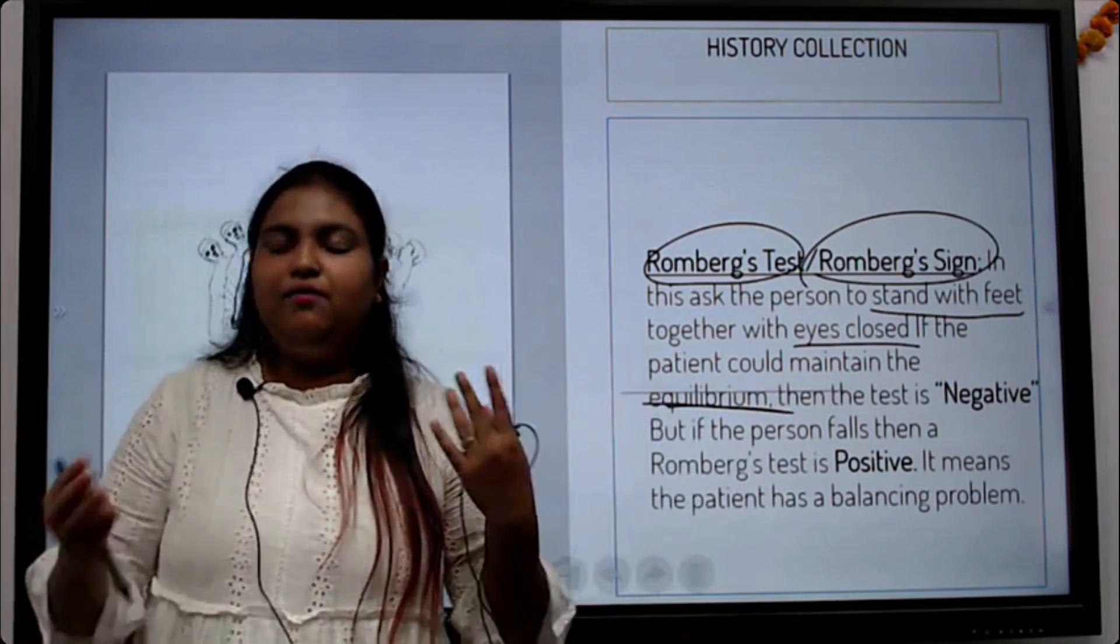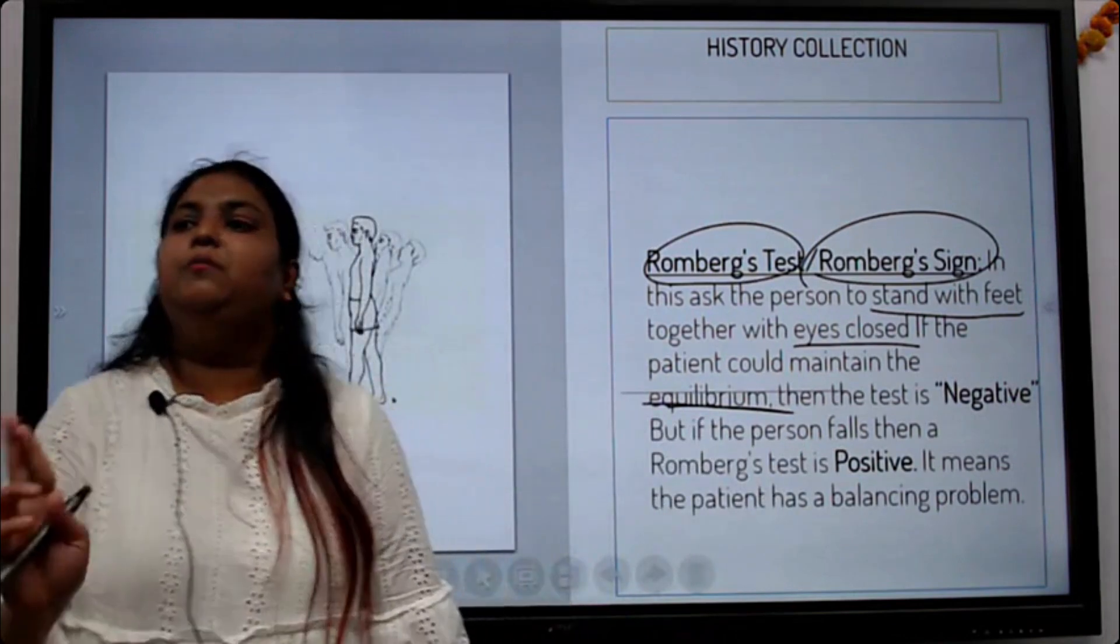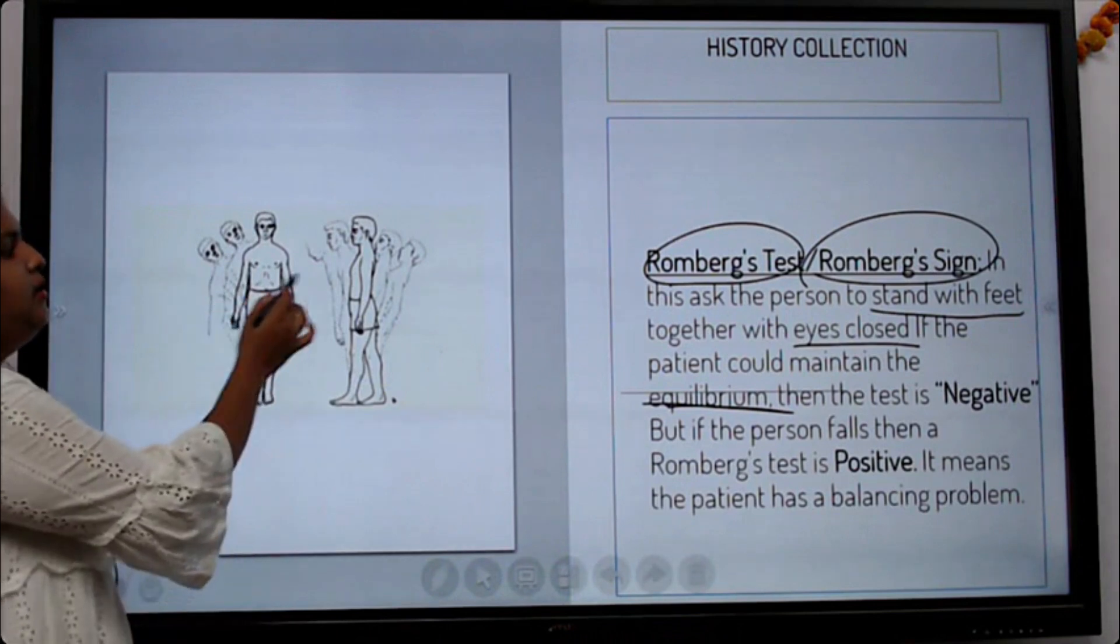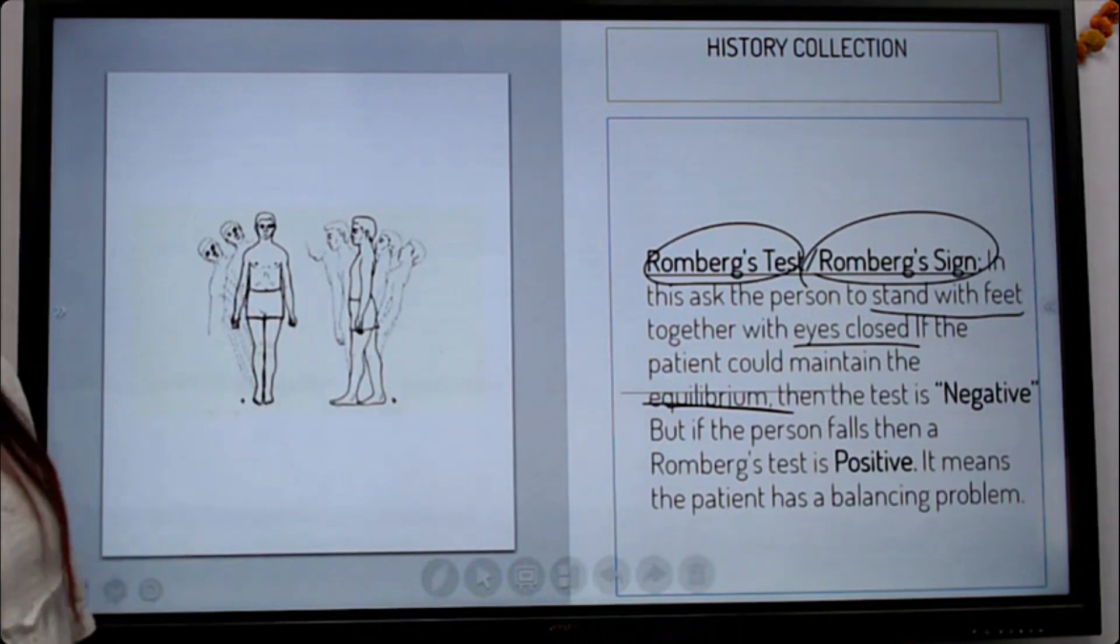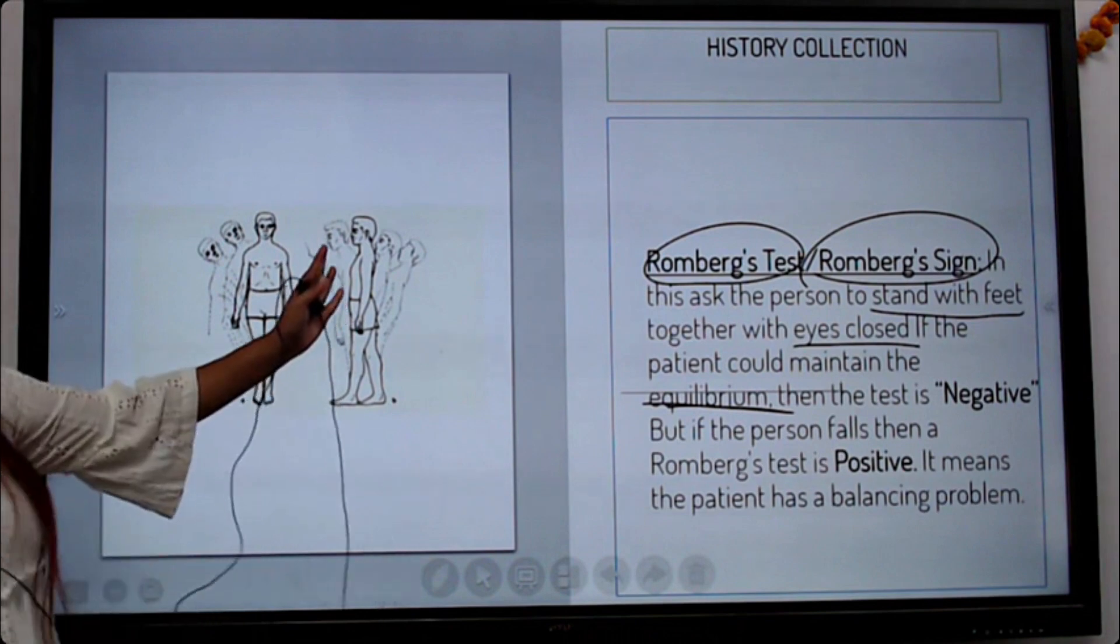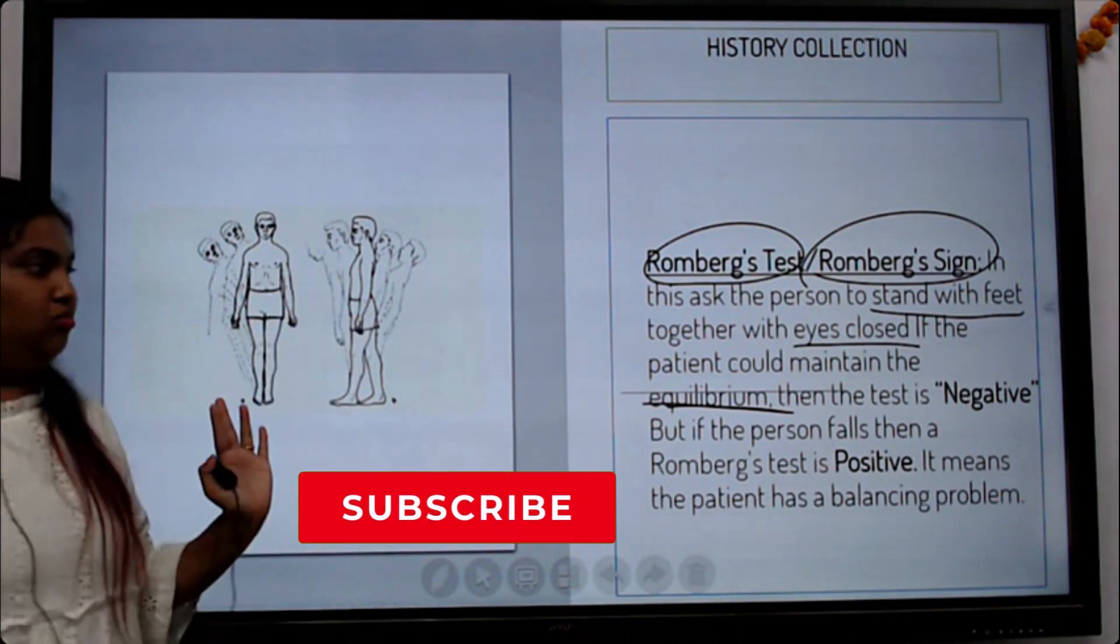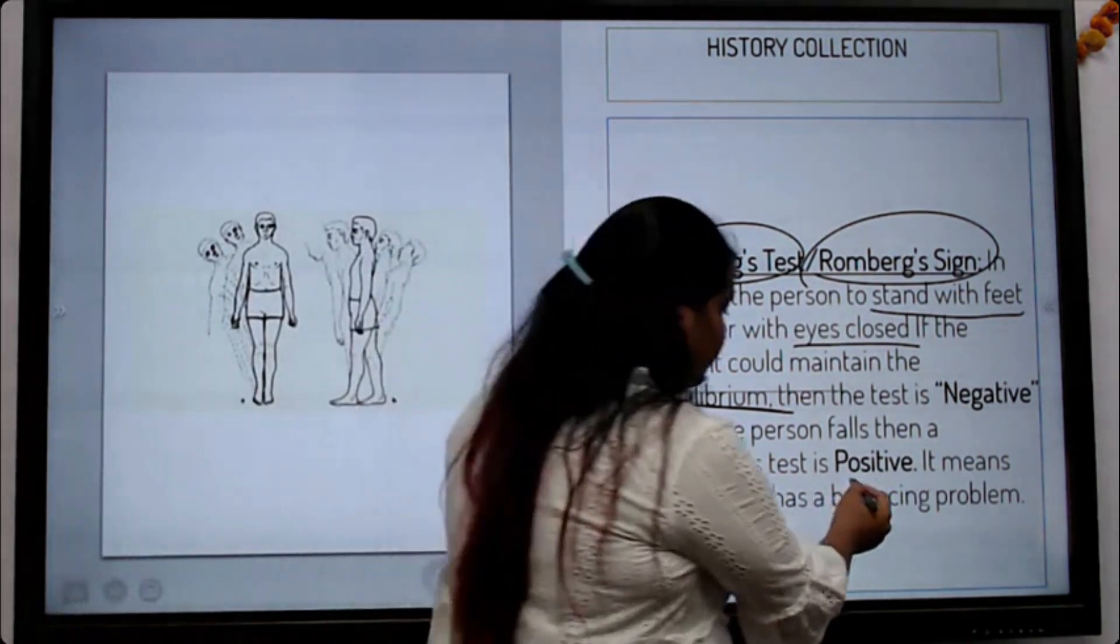Eyes and feet together is a good way to test equilibrium. So when they close their eyes, if they are going to stand still, but people who have balancing problems they might go this way.